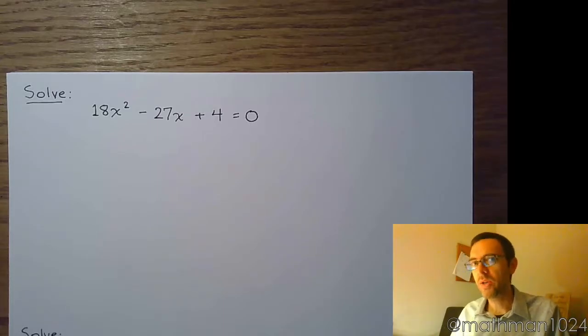All right, let's look at two more algebraic equations. Here we have one that looks like a classic quadratic, 18x² minus 27x plus 4 equals 0.